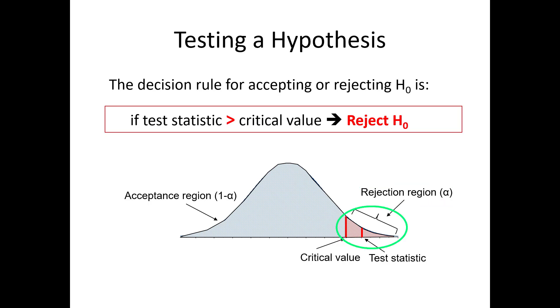Third, the size of the rejection region, or the area under that part of the curve, is equal to the significance level alpha. In other words, the critical value and alpha are mirror images of each other. As the critical value increases, alpha decreases, and vice versa.